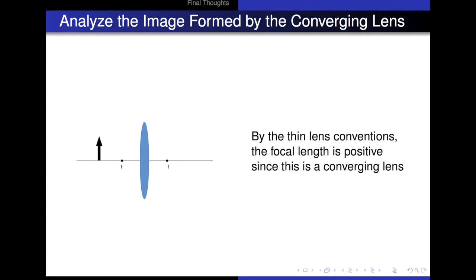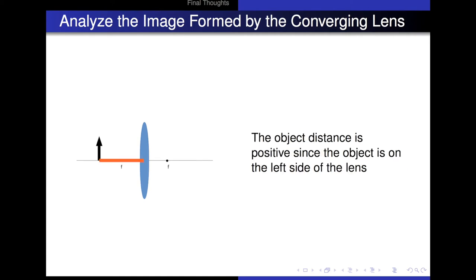By the thin lens conventions, the focal length is positive since this is a converging lens, and the object distance is positive as well since the object is on the left side of the lens.